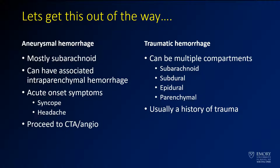We're not going to talk about aneurysmal or traumatic hemorrhage very much. Aneurysmal hemorrhage is mostly subarachnoid hemorrhage. You can sometimes get associated lobar hemorrhage, particularly in the inferior frontal lobes. You'll often have acute onset symptoms — syncope, headache — worst headache of life is the classic presentation. Those hemorrhages tend to go on to CT angiogram or angiography, and once the finding is known, it's not that much of a diagnostic dilemma.